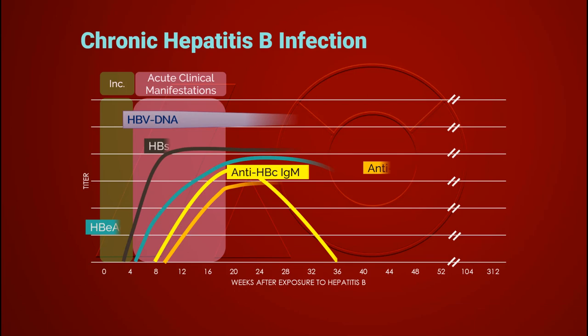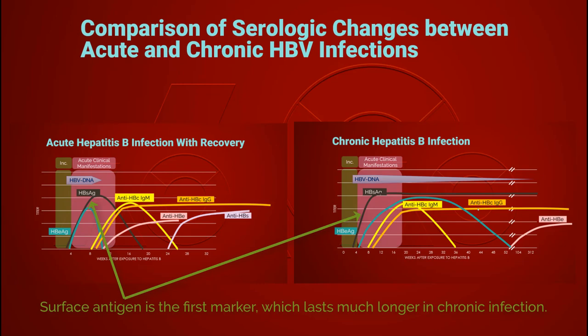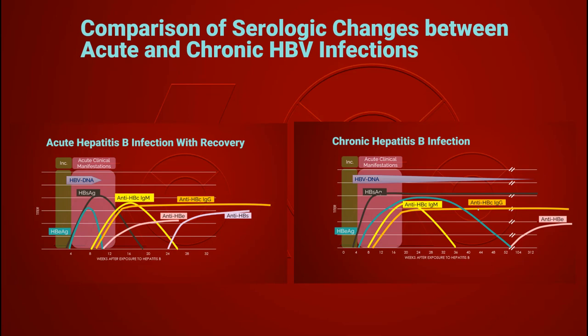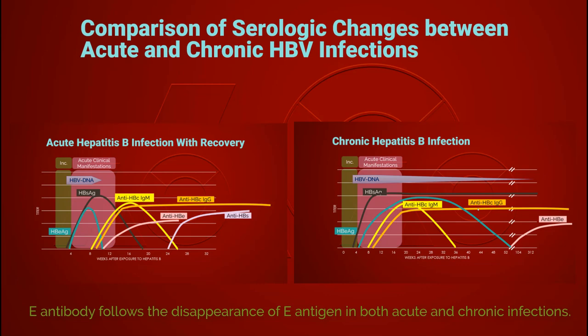The serological markers for hepatitis B in chronic infection are shown in this graph. Hepatitis B surface antigen still is the first marker and will persist during chronic infection. Hepatitis B e antigen will be present for months to a few years until the e antigen-negative phase is achieved. Hepatitis B e antibody still follows the disappearance of e antigen; however, in acute infection e antibodies appear much earlier, whereas in chronic infection this antibody will not appear until months or years later.